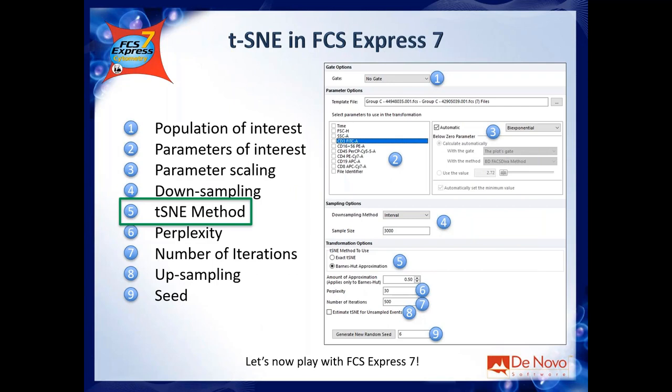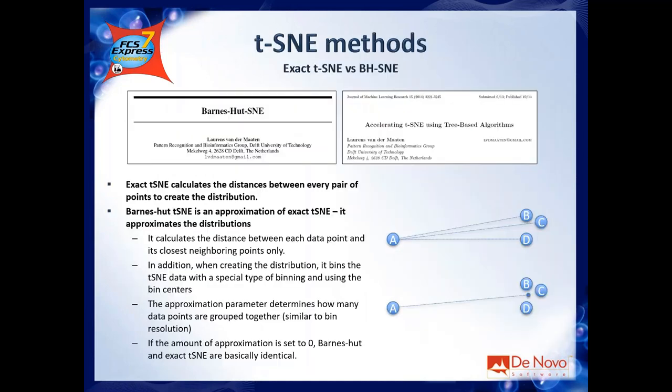Step five: tSNE method. The original tSNE published in 2008 and 2013 was quite slow — fine for a few hundred cells but otherwise too slow. In 2014, the same author published a new version called Barnes-Hut approximation, or BH-tSNE. One of the main advantages is how tSNE calculates distances. In the original version, tSNE calculated pairwise distances between all events — a huge amount of calculation: with 1,000 events, that's 1,000 × 1,000 ÷ 2, or half a million calculations.